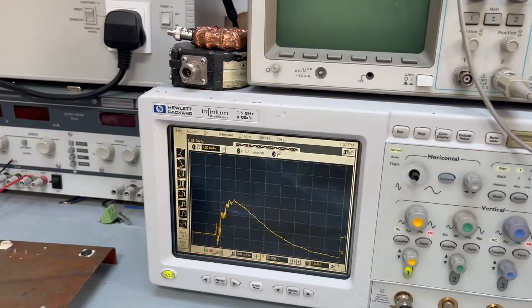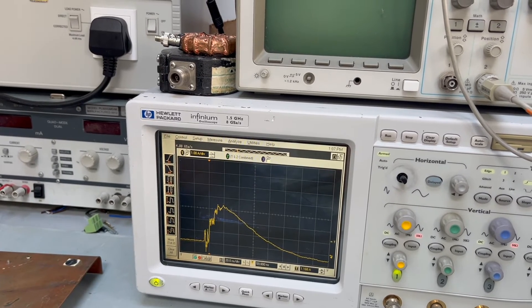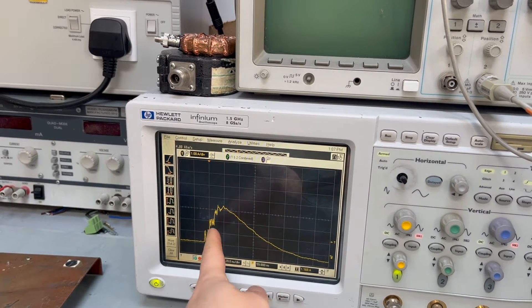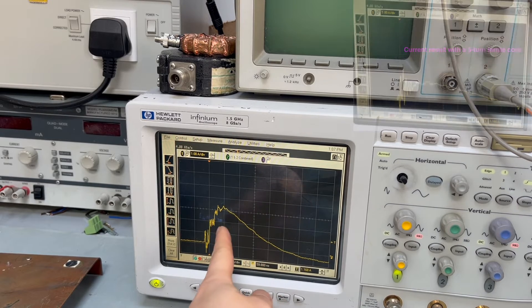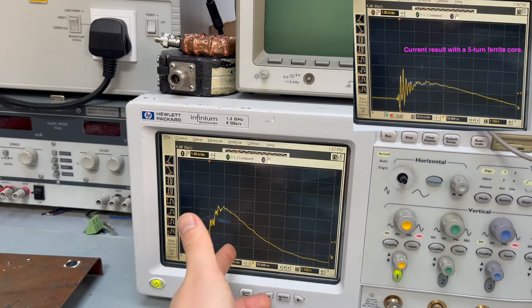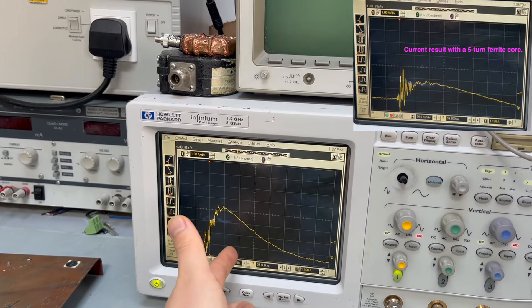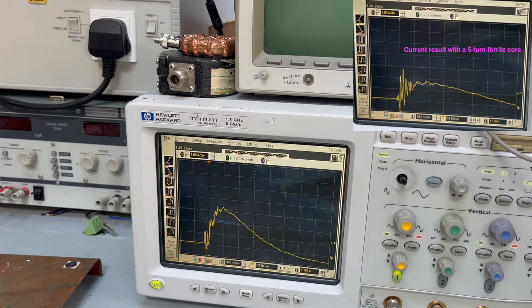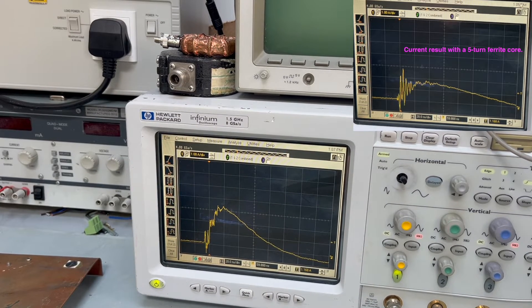Now let's have a look. This is the result of five single turn ferrite core. Notice that the lower frequency content, previously we had about peak about two amps maximum, actually less than two amps. But now this is one, two, three, three amps. So in terms of lower frequency performance, this is worse.